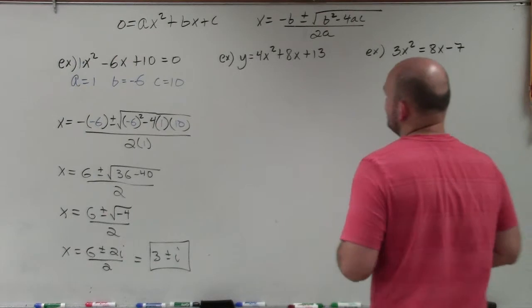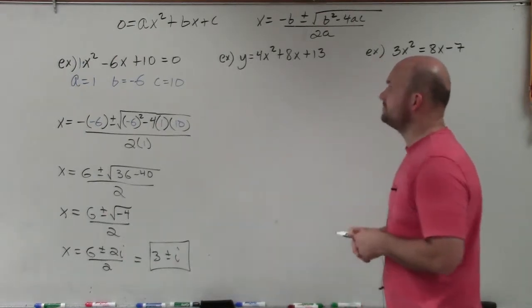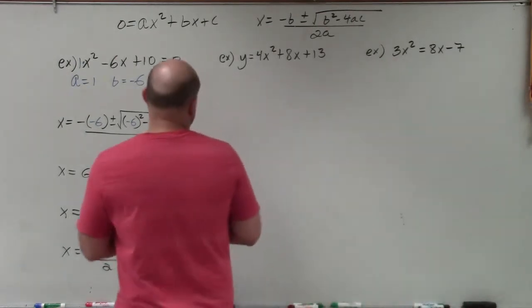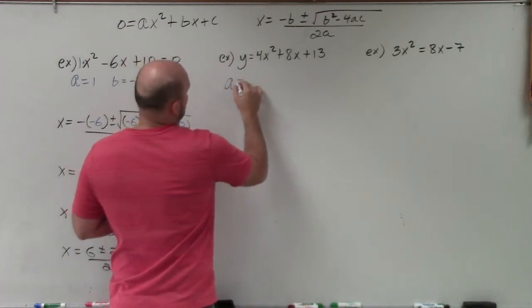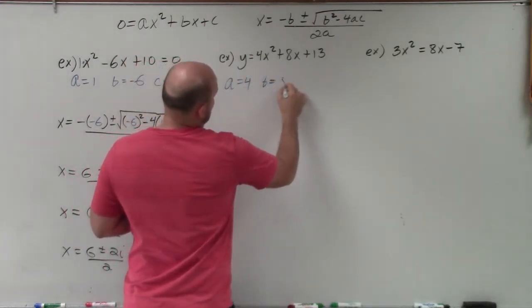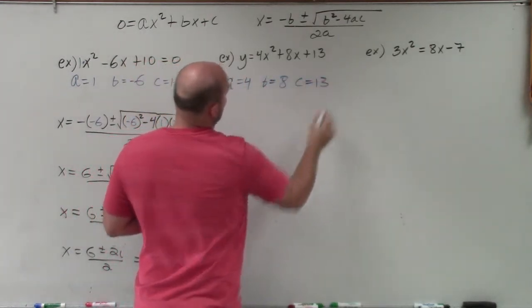Let's move on to the next one: y equals 4x squared plus 8x plus 13. We do the same thing — identify a, b, and c. In this case, a equals 4, b equals 8, and c equals 13.